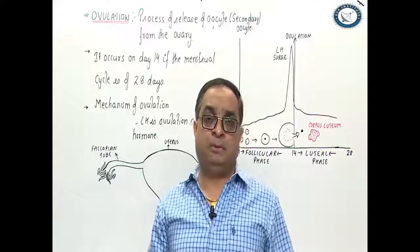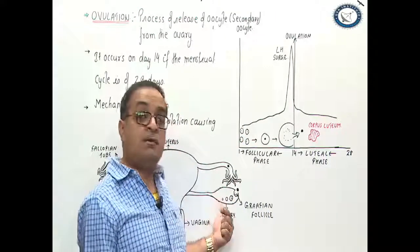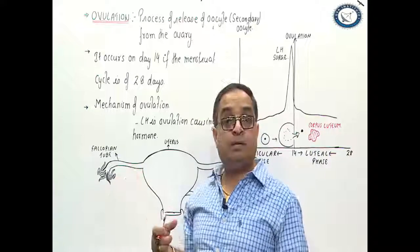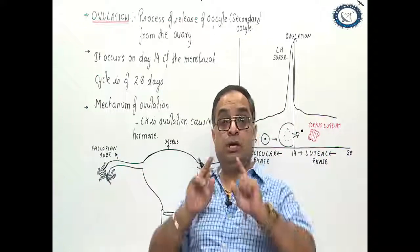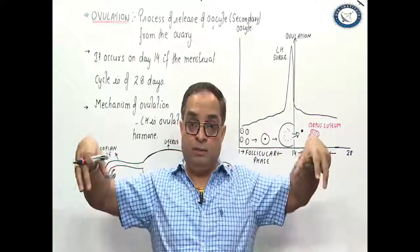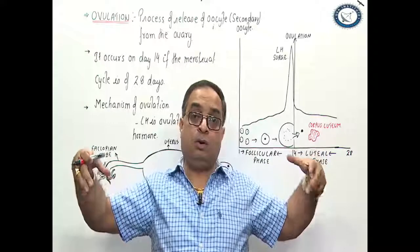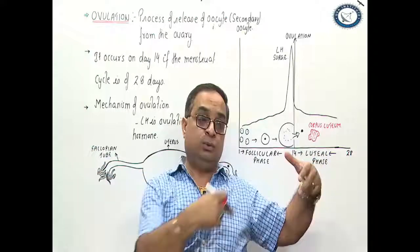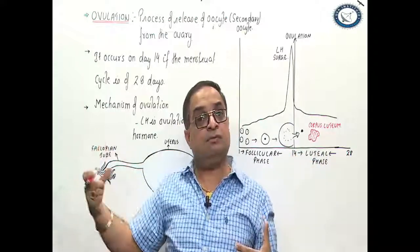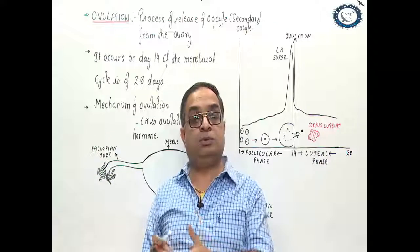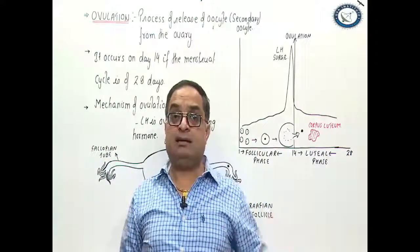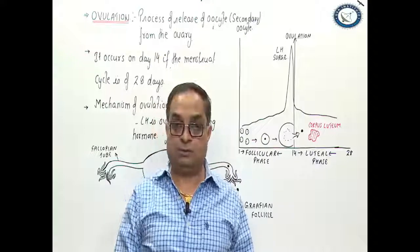Please remember, the oocyte released from the right ovary can enter into the left fallopian tube also. Imagine this structure in a three-dimensional way — there are two fallopian tubes and two ovaries, and the oocyte released from one side can enter the fallopian tube on the opposite side as well.